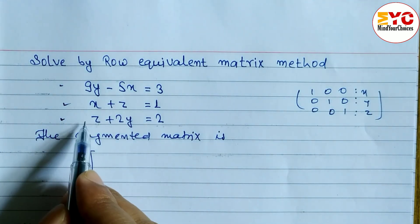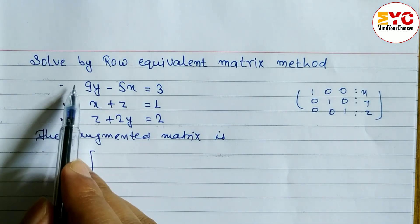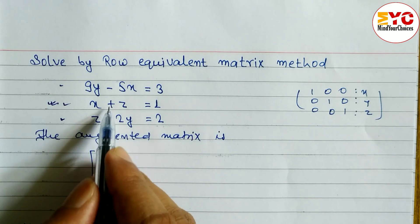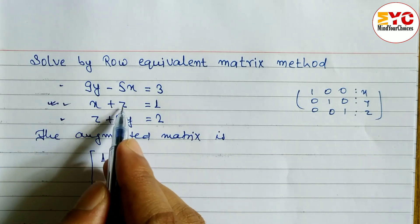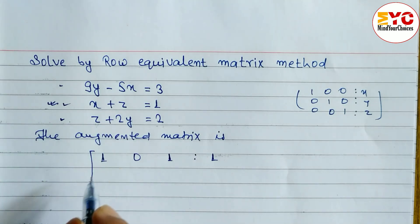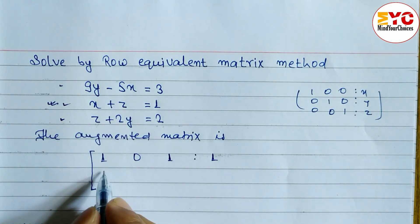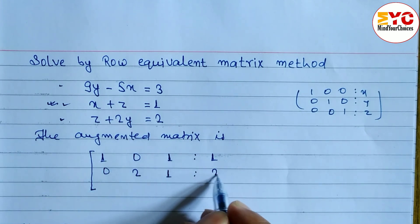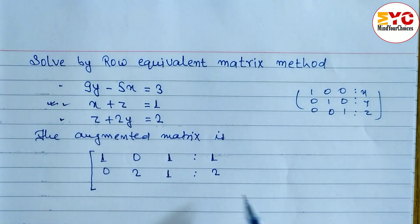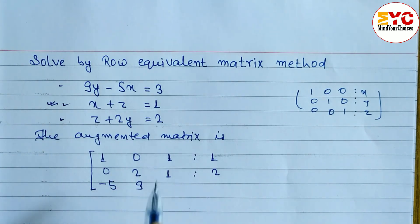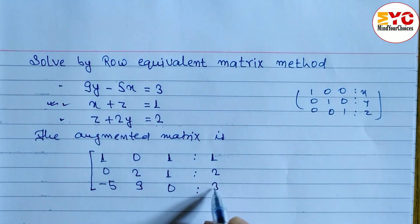We can rearrange the equations. I'm going to take one equation first: coefficient of x is 1, coefficient of y is 0 (y is not given), coefficient of z is 1, and constant is 1. Second row: x is not given so 0, coefficient of y is 2, coefficient of z is 1, constant is 2. Third row: coefficient of x is -5, coefficient of y is 9, z is not given so 0, constant is 3.